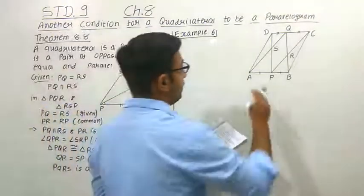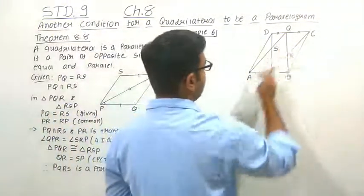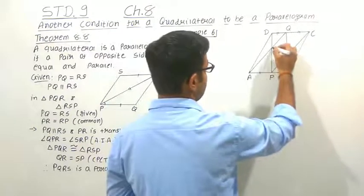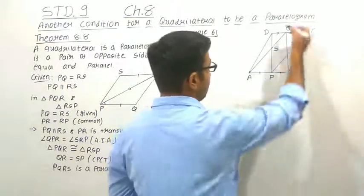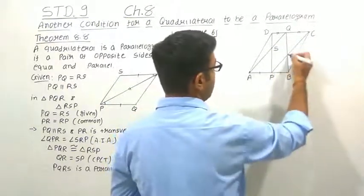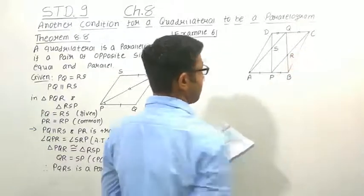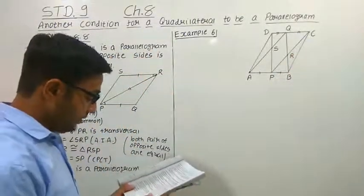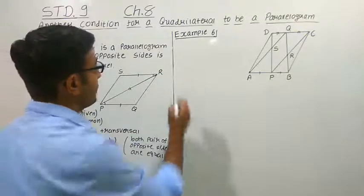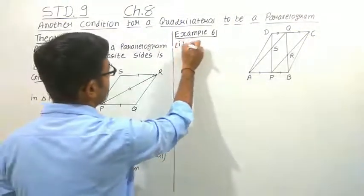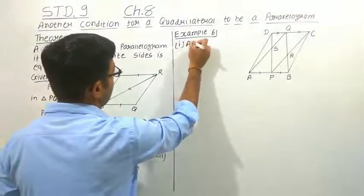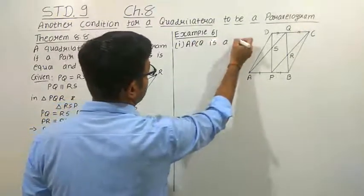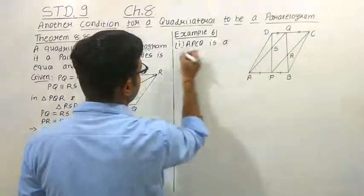If we join AQ, then it intersects DP at point S. In the same way, BQ and CP intersect at point R. The first thing we have to prove is that APCQ is a parallelogram.